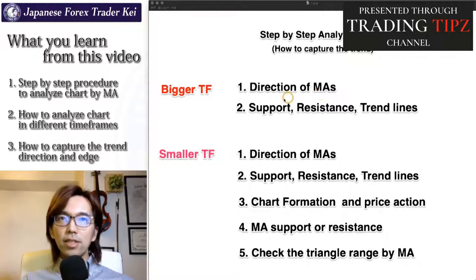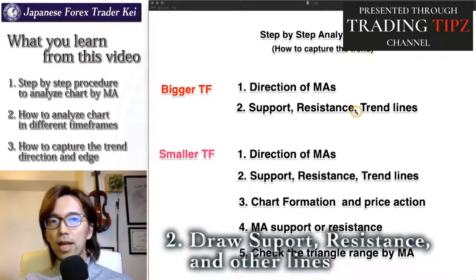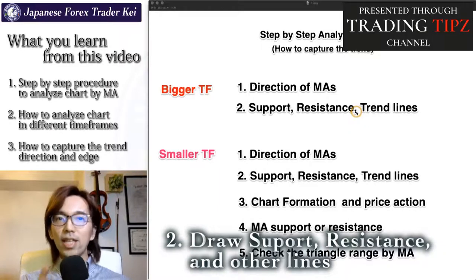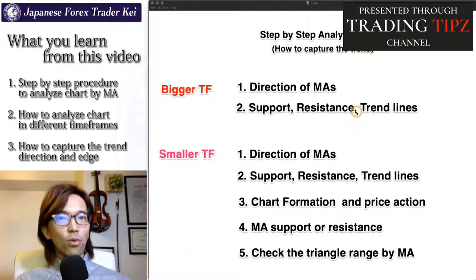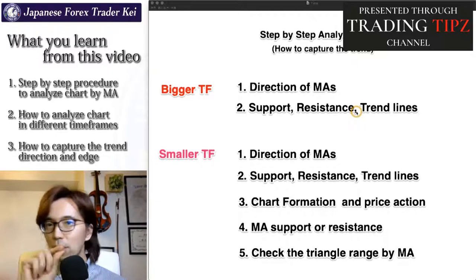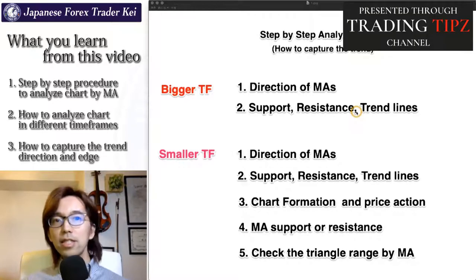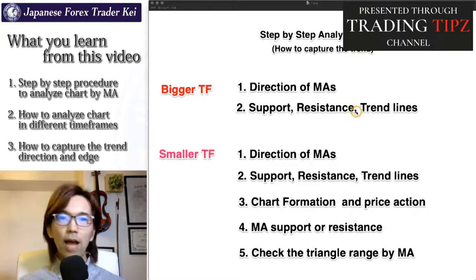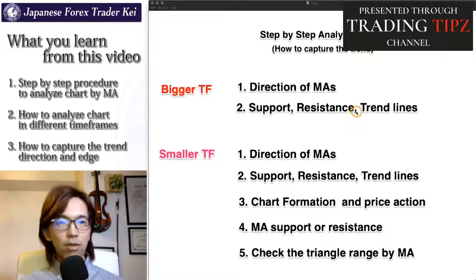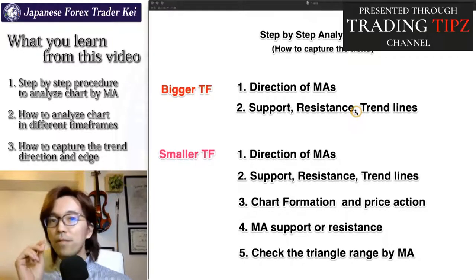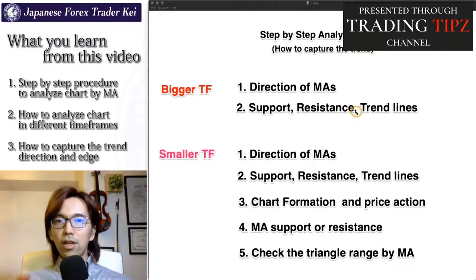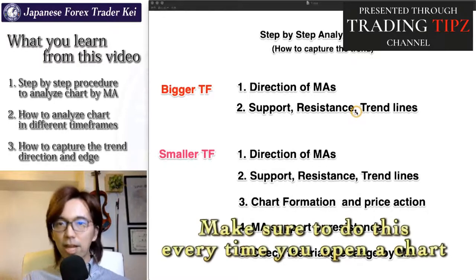Secondly, identify resistance and support, and also trend lines or channel lines on that bigger time frame. In the bigger time frame, look for a chart or pair in which all the moving averages are pointing towards the same direction, and also draw resistance or support lines or trend lines or channel lines. This is part of the preparation I do every time I open up a new chart with moving average or Ichimoku Kinkouhyo or GMMA or any indicators that tell me the direction of a trend. Make sure you do this first every time to know exactly which direction you want to take trades.